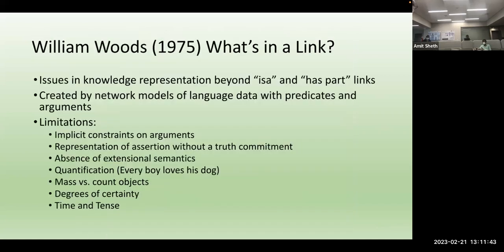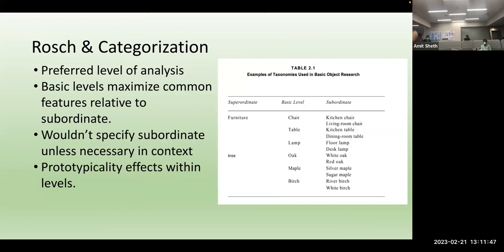Another issue that came up in the refinement of these semantic memory models is the notion of categorization. In a categorization hierarchy you want to know what abstraction is — you can think of categorization along multiple levels of abstraction. Rosch's main contribution is the distinction between a superordinate level of abstraction, a basic level of abstraction, and a subordinate level of abstraction. The basic-level features are more or less correlated with each other in a way that superordinate features are not.